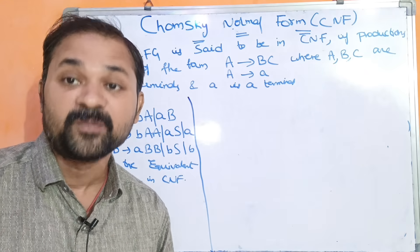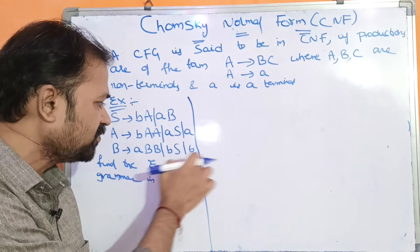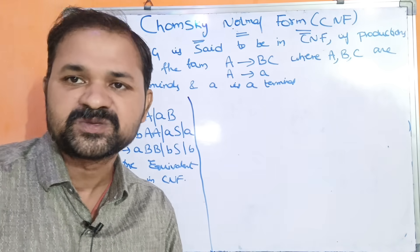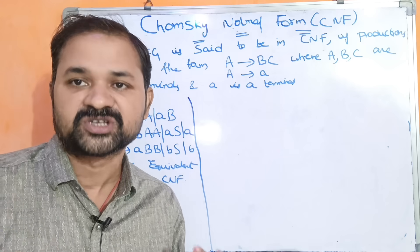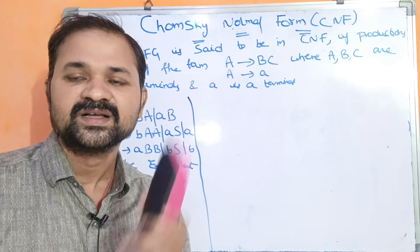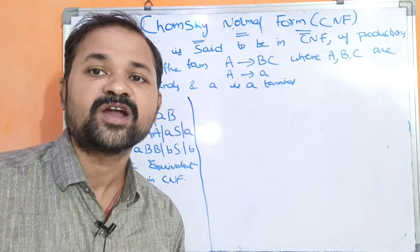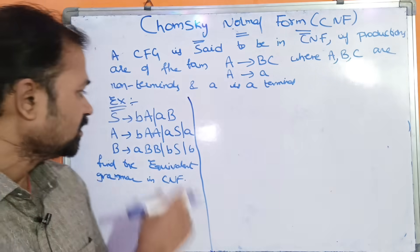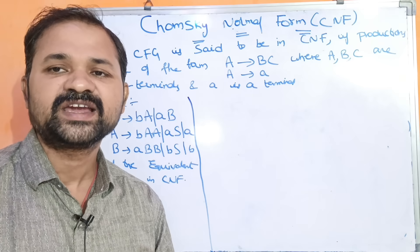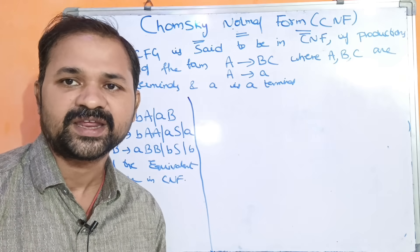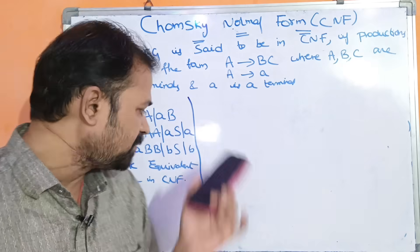Epsilon productions are not available here, so there are no epsilon productions. For unit productions, the right-hand side should contain only one non-terminal, but we don't have a single non-terminal on the right-hand side. So we can say that all these productions are already in simplified form.